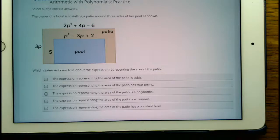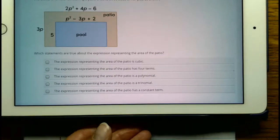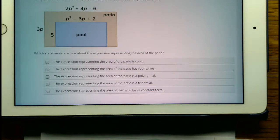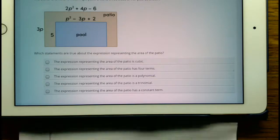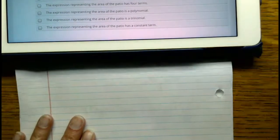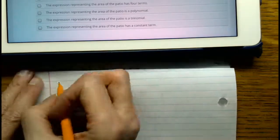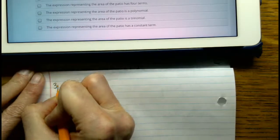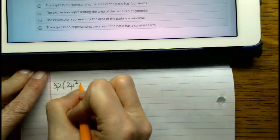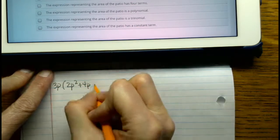Well, if we wanted to find the area of the patio here, I'm going to kind of go back and forth with the iPad for a minute. What needs to happen is that we're going to take 3p length times width, 2p squared plus 4p minus 6.